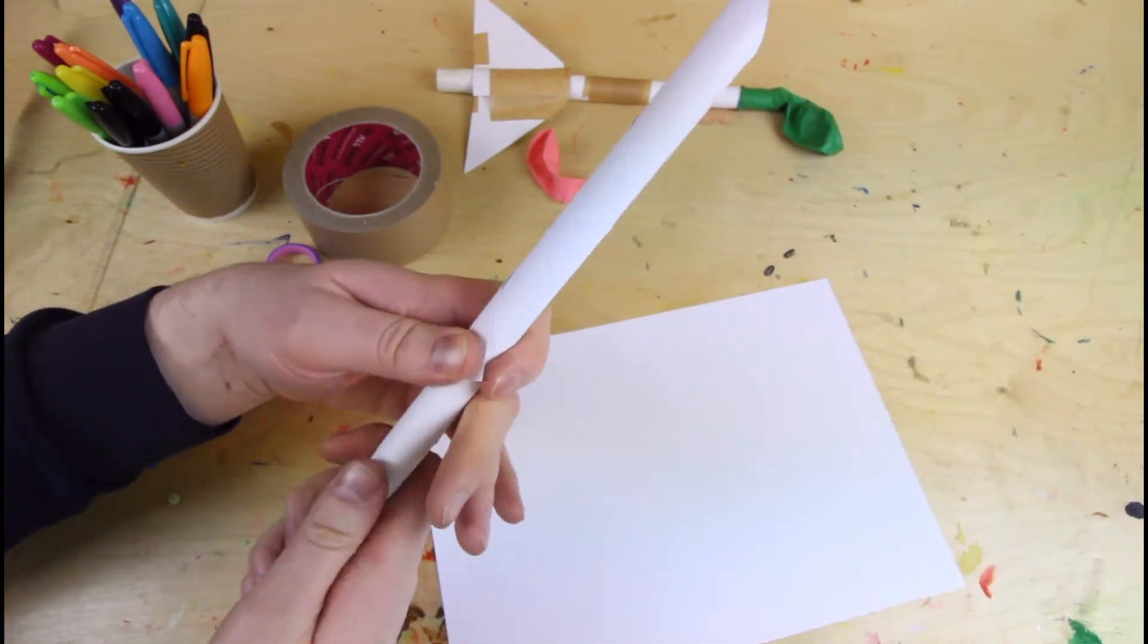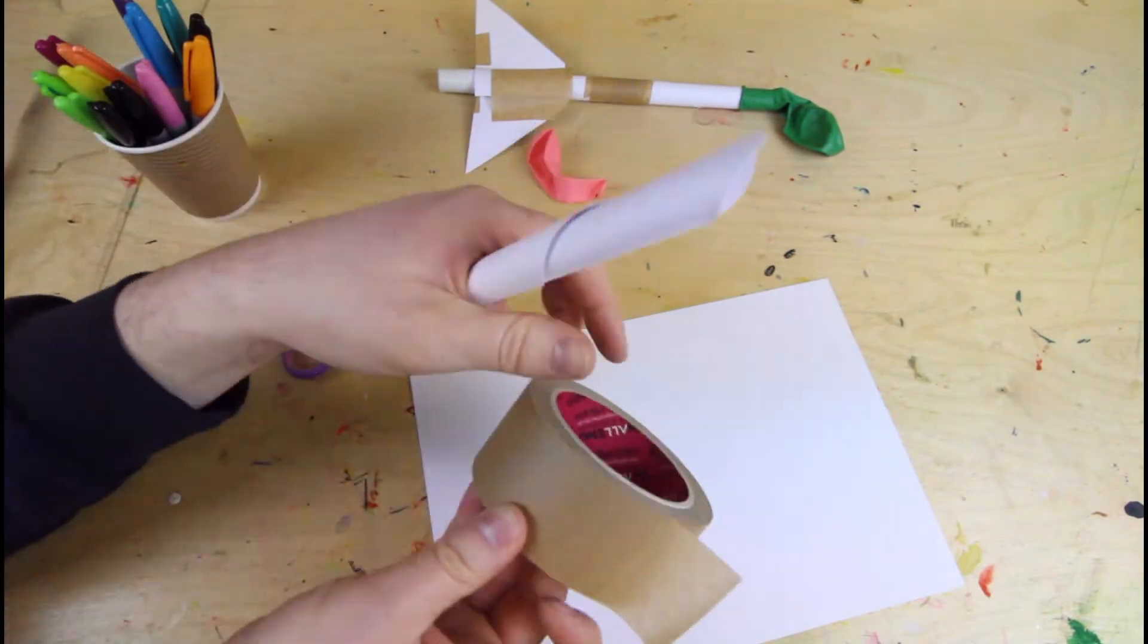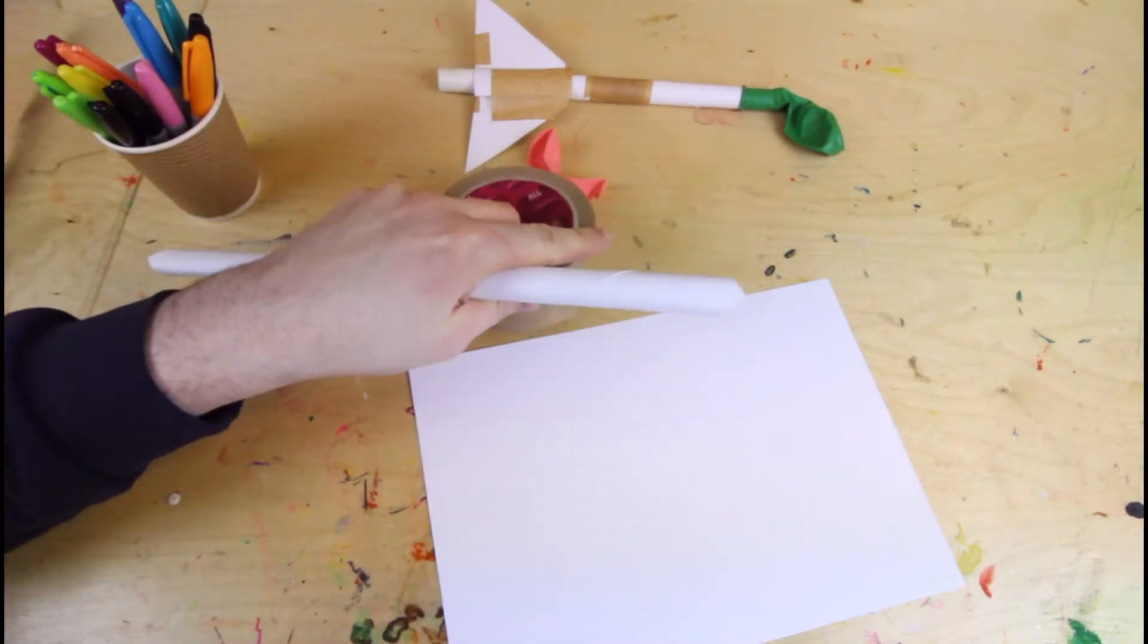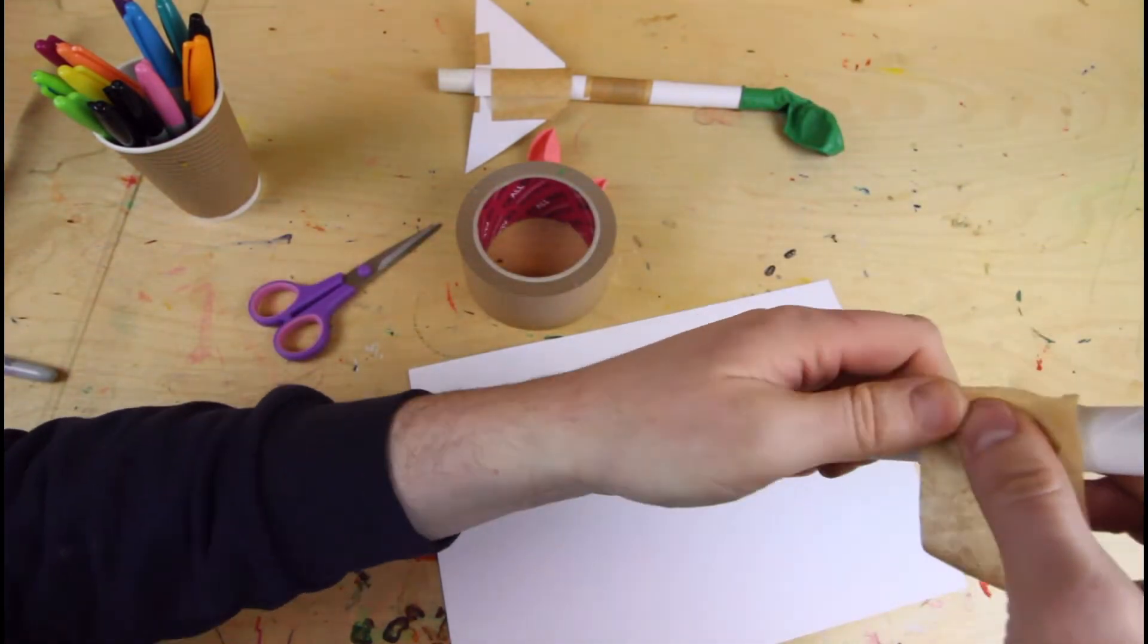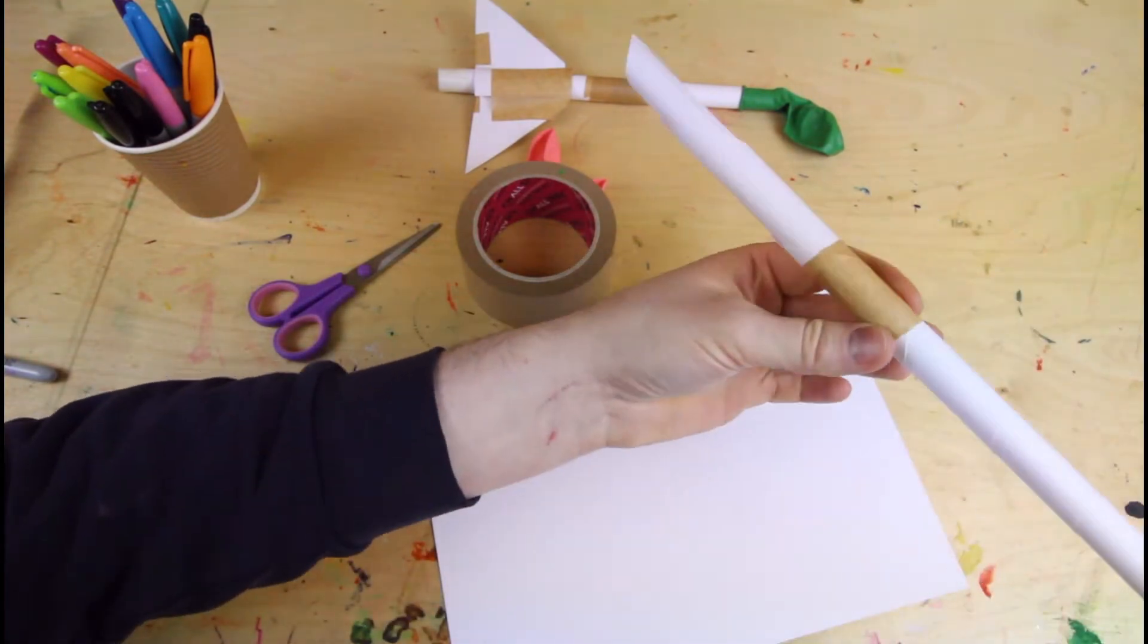So you've got a tube. Hold it together and get yourself some tape. And then you're just going to tape that round. Like so. And that'll keep it together.